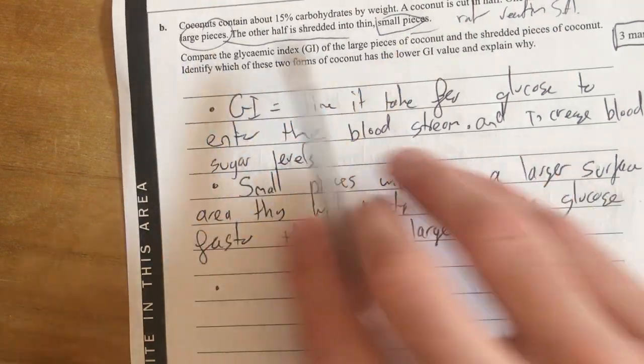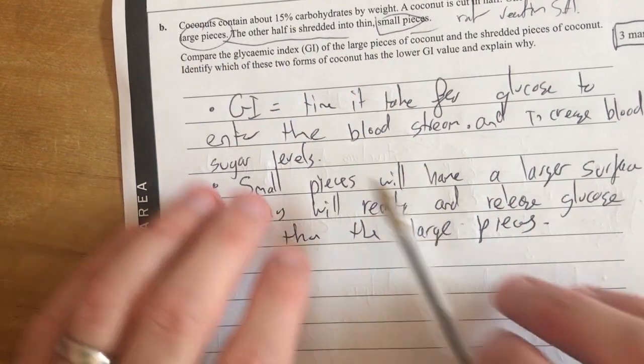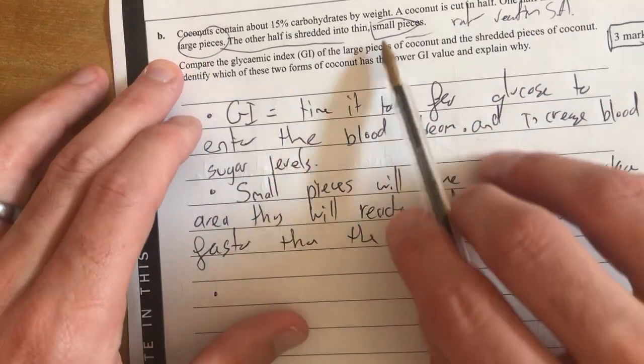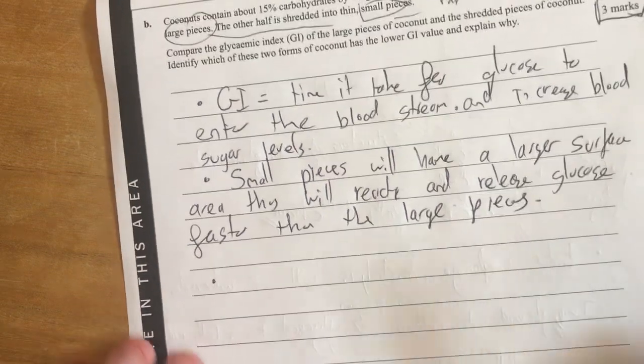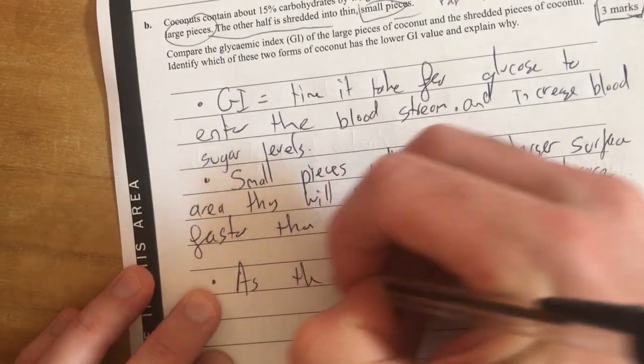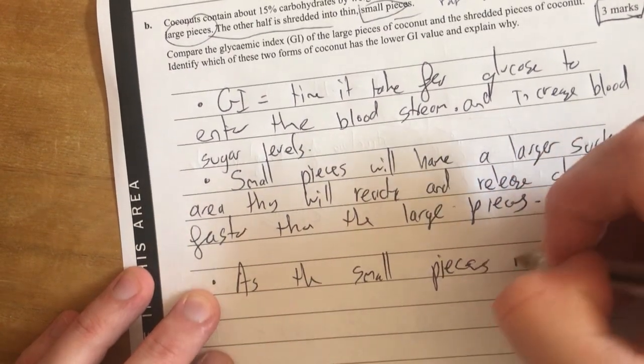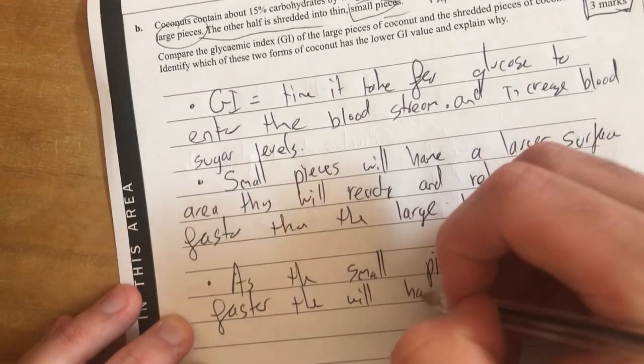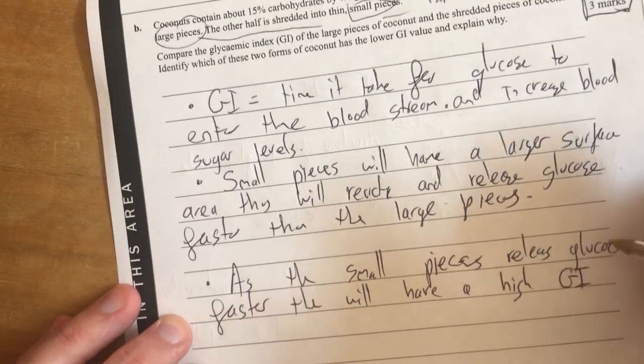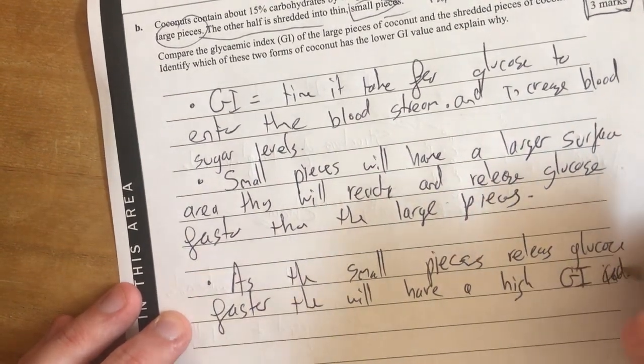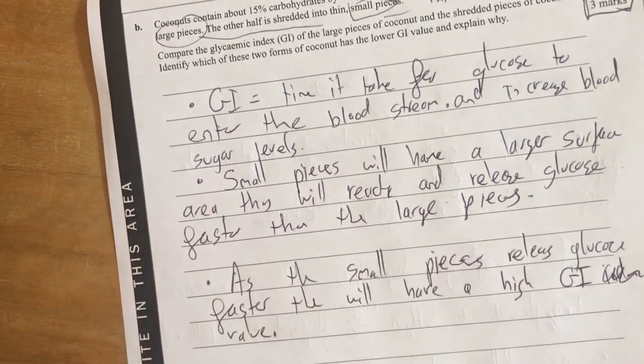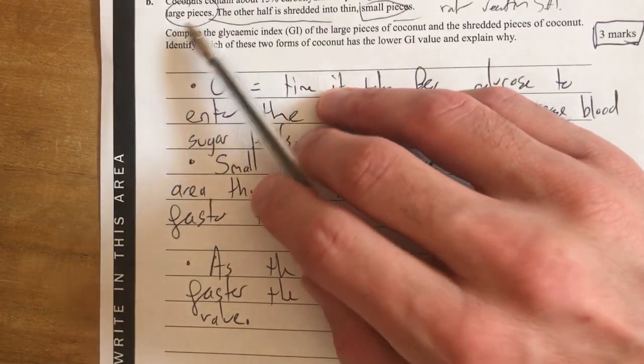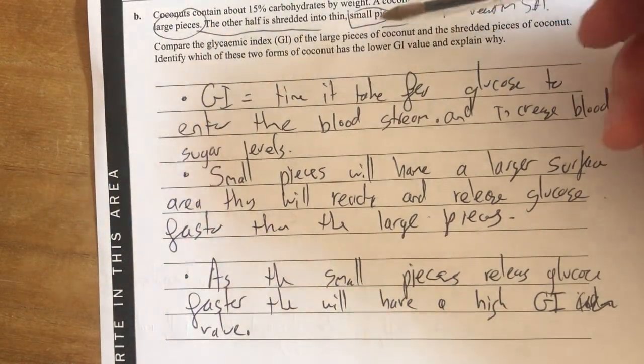Thus will react and release glucose faster than the large pieces. So I've quickly looked at what's going to happen to these things and basically explained it. I haven't thought about GI just yet. I've basically said what do I know about large and small pieces. It's about rate of reaction. So that tells me that large pieces will react slower. Small pieces will react faster because of the surface area. Then I can then say as the small pieces release glucose faster, they will have a higher GI value.